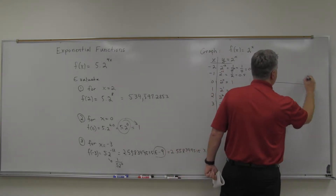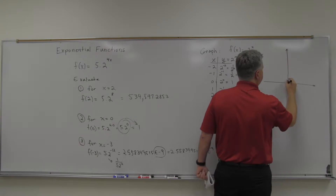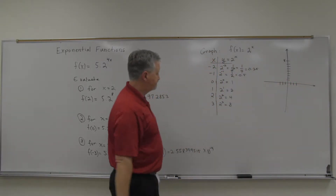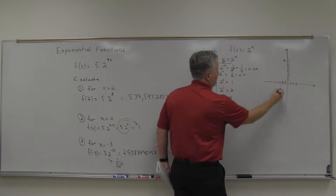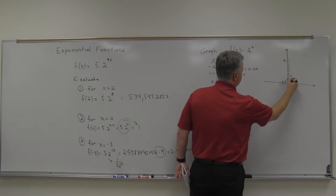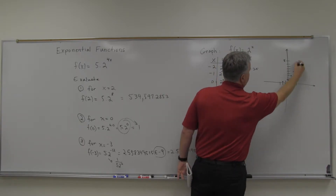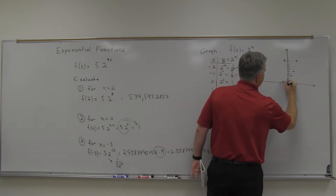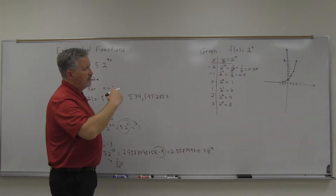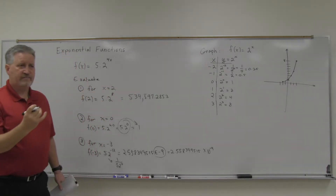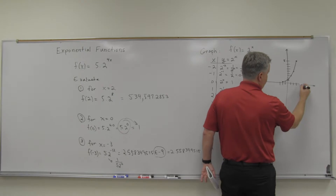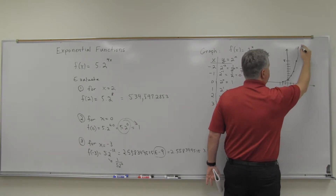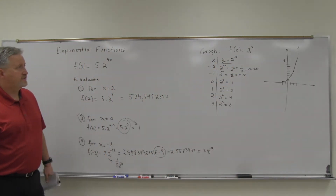We get this graph right here. At negative 2 I'm at 0.25, at negative 1 I'm at 0.5, at 0 I'm at 1, at 1 I'm at 2, at 2 I'm at 4, and at 3 I'm at 8. It's hopefully obvious that over on the right, as far as end behavior goes, those numbers are getting quite large quite fast. The next one would be 16 if we went to the next integer. That side is definitely going up to infinity quite fast.